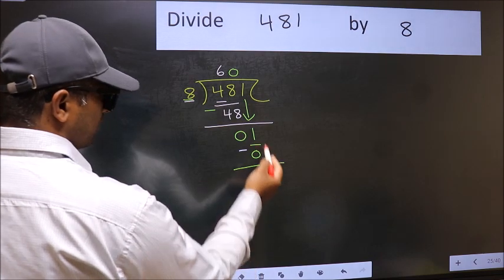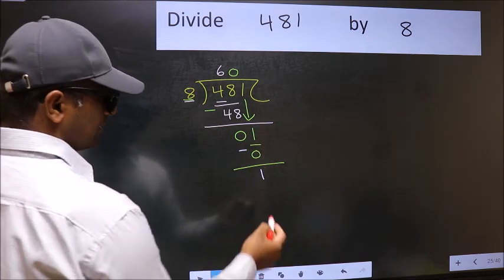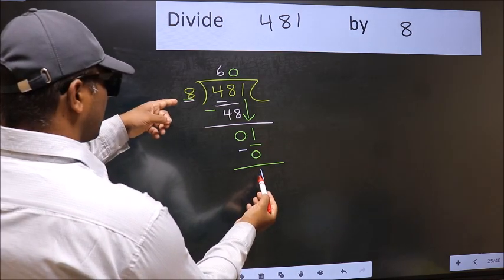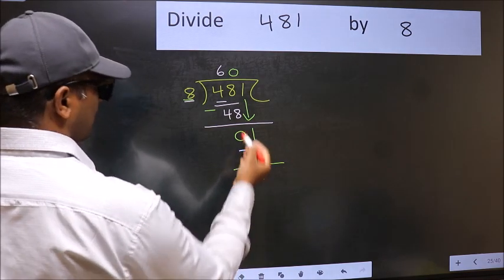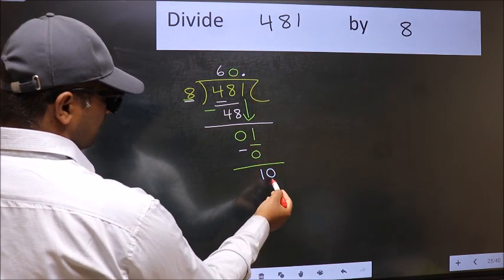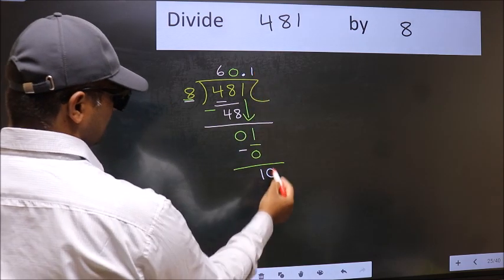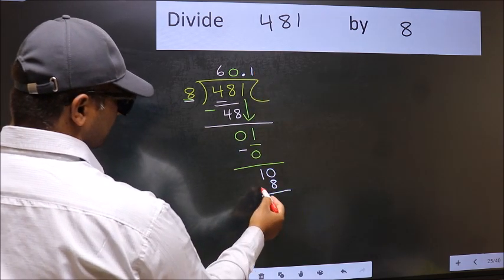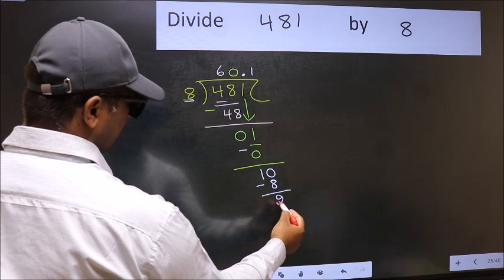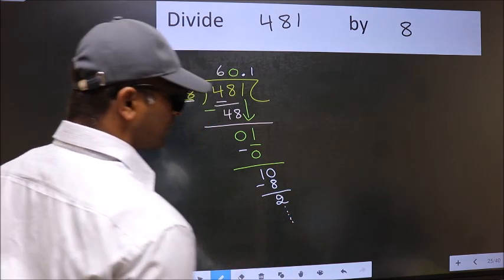Over here, we did not bring any number down, and 1 is smaller than 8. So now you can put dot and take 0. So 10. A number close to 10 in 8 table is 8 once 8. Now you should subtract. We get 2, and continue the division. I am not doing that.